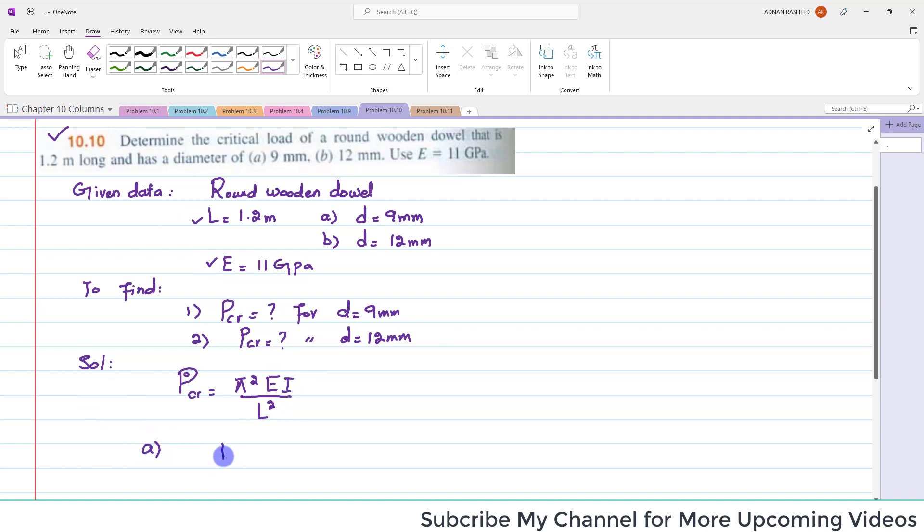So from this formula we can see that in given data E is given, L is given, so E is available, L is available, I is not available. So we will derive, we will find out the I for this d equals 9 mm. So we know that for solid circular shape we have I is equal to pi by 4 d to the fourth. So you can put the value pi by 4 and this d is equal to 9 mm, so 9 to the power 4.